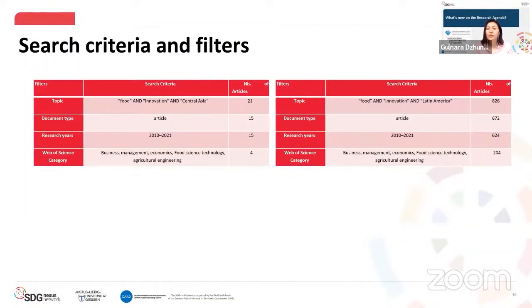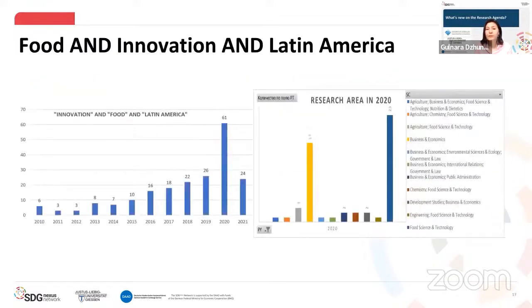Now, about Latin America and Central Asia. Here are two tables with the specified criteria for literature selection. We identified the main topics for analysis: food and innovation in Central Asia, and food and innovation in Latin America. We used filters for document type (articles), publication year 2010–2021, Web of Science categories including business, management, economics, food technology, and agricultural engineering. We also searched specifically using countries of Latin America and Central Asia, then deleted duplications, giving us 204 peer-reviewed articles for Latin America and only four articles for Central Asia. The data shows that the number of articles is growing.